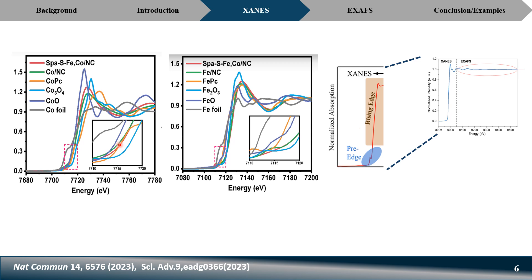You may not know the exact oxidation state from this comparison alone — in some cases you can only estimate. However, if you synthesize additional control samples and their XANES peaks match your material exactly, you can determine the exact oxidation state. The same approach applies to the iron spectra: the foil peak is at low energy, the oxide at high energy, and your material falls in between. From oxidation state data alone, knowing the coordination environment requires additional analysis.